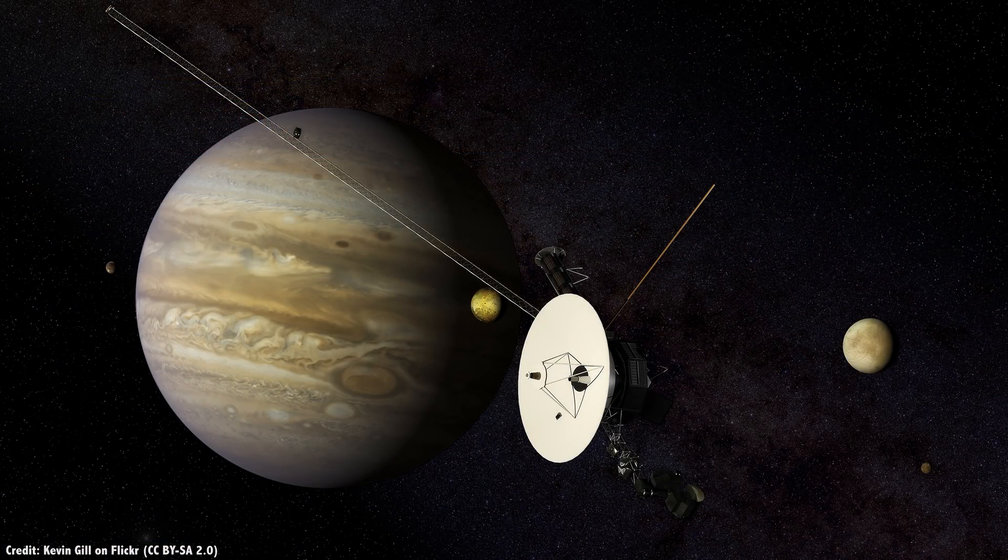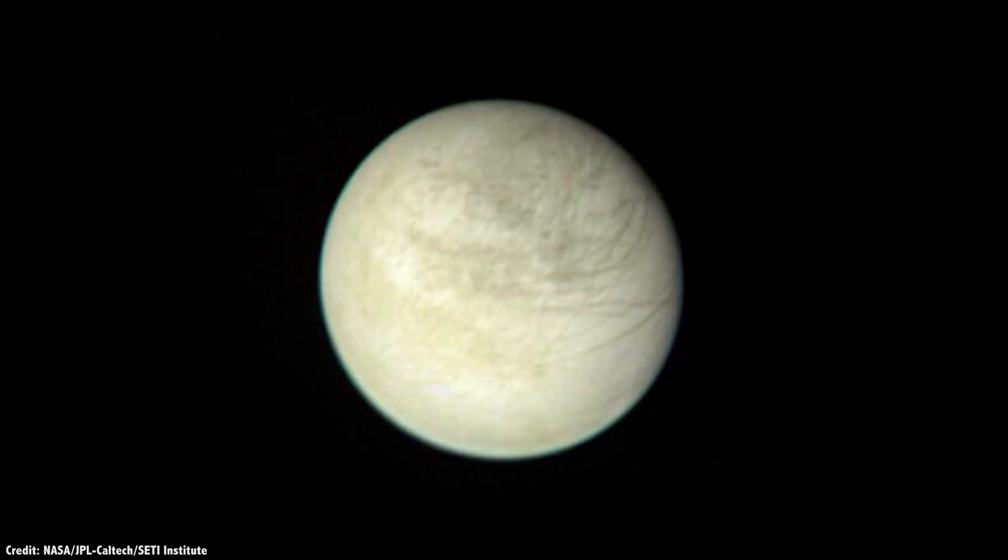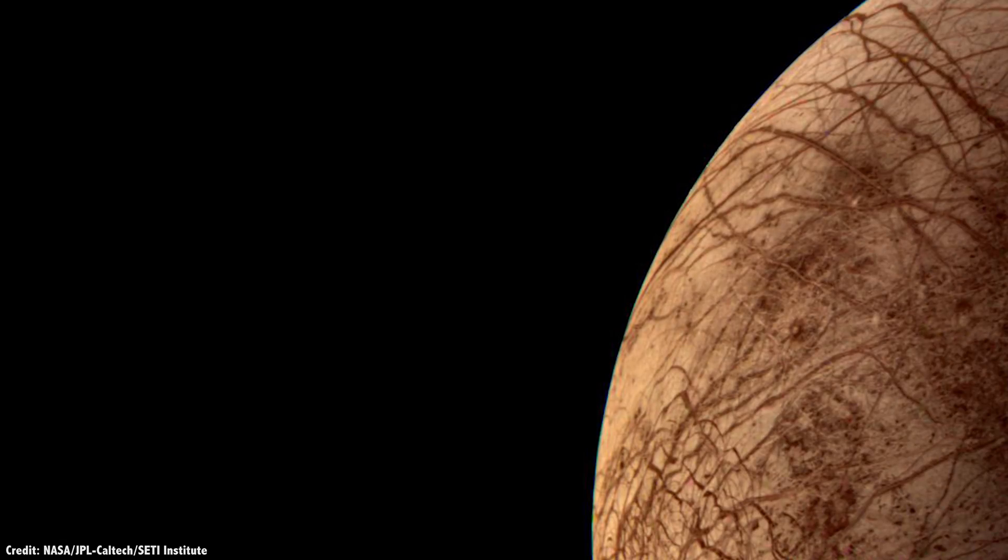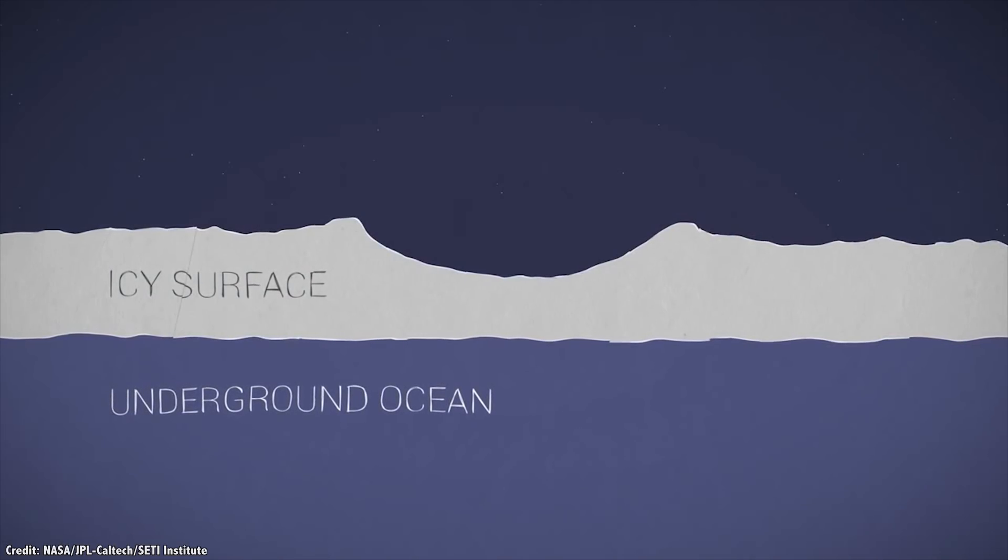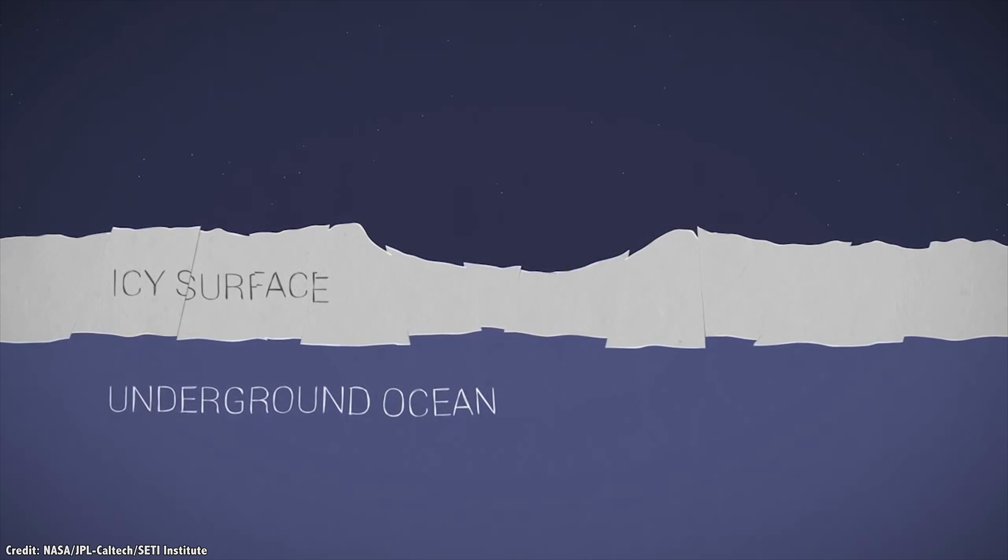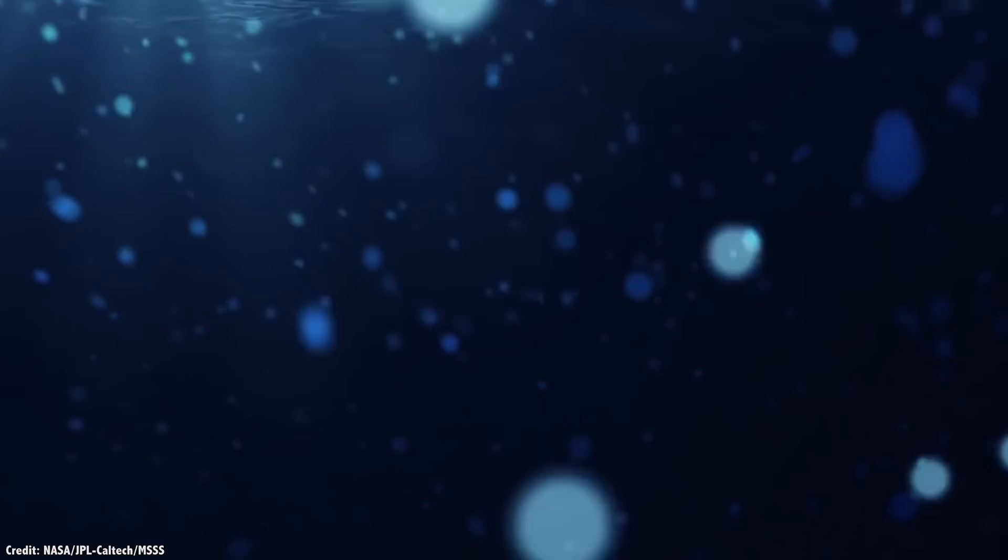When NASA's Voyager spacecraft flew past Europa, it revealed a world covered in fresh ice, with very few craters. Huge, dark lines seem to indicate that the ice is shifting and cracking, like plate tectonic activity here on Earth. And somewhere down there, there's liquid water.